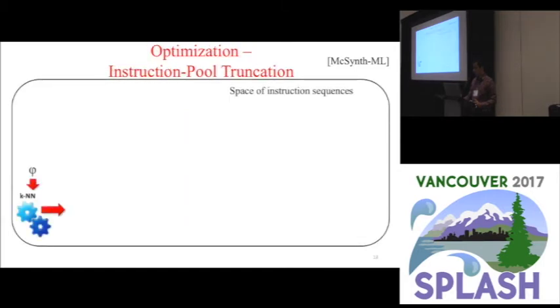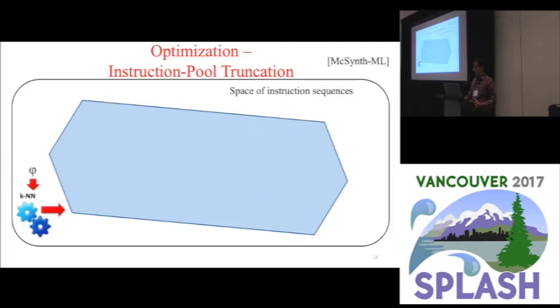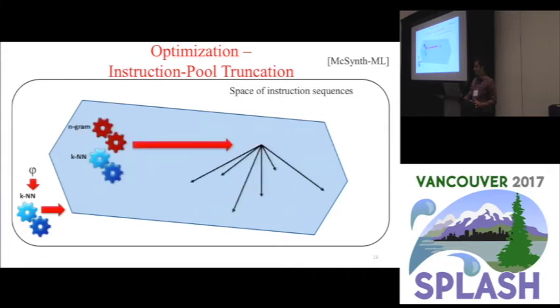There's one further optimization step. At the beginning of synthesis, we use our regression model to truncate the instruction pool. That is, we threshold the instruction pool to contain only opcode variants which our regression model predicted to be likely contained in the sequence. In our experiments, this step reduced the size of the instruction pool by tenfold on average. If synthesis with the truncated pool fails, we fall back on the untruncated pool. So, again, our completeness property is preserved.